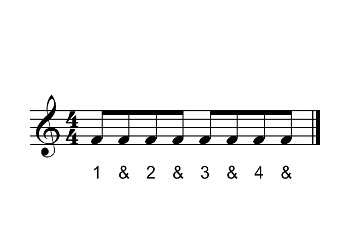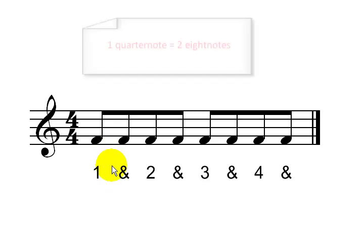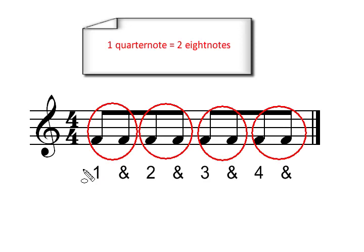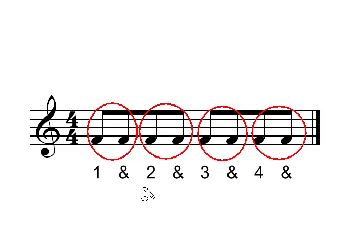Now we come to the 8th notes. Here you will see that each count in a measure takes 2 8th notes. Therefore, we have to count 1 and, 2 and, 3 and, 4 and, because every quarter note beat contains 2 8th notes. I have drawn a circle around the quarter note beats — this is the first quarter note beat, second, third, and fourth. So you see inside each circle, that is, each beat, there are 2 8th notes. Therefore, we have to count 1 and, 2 and, 3 and, 4 and.